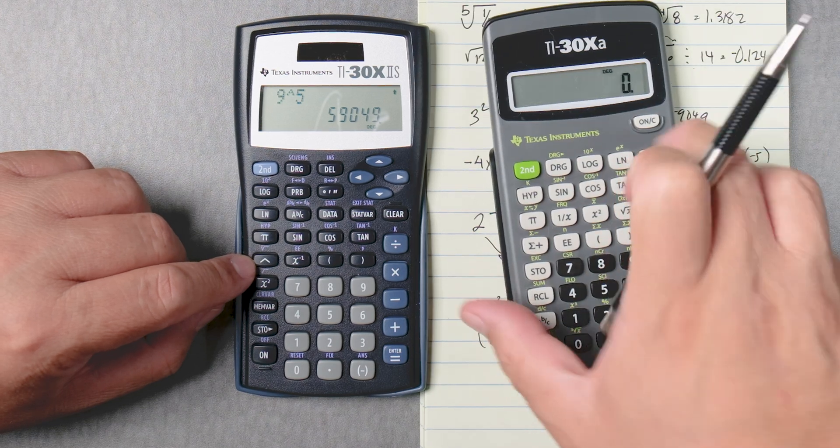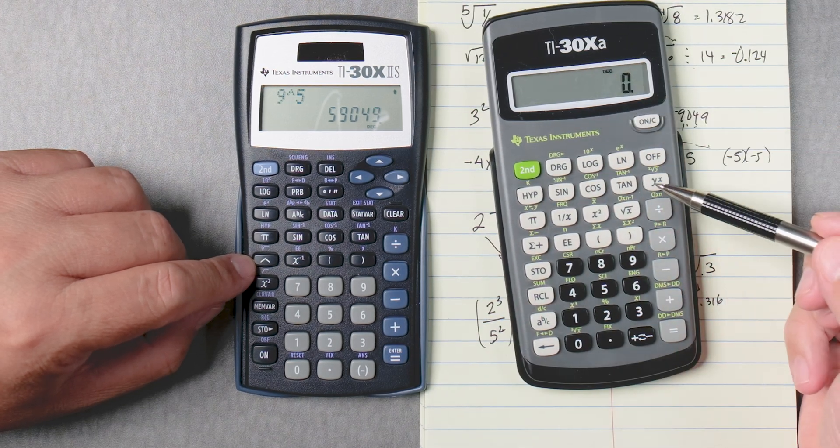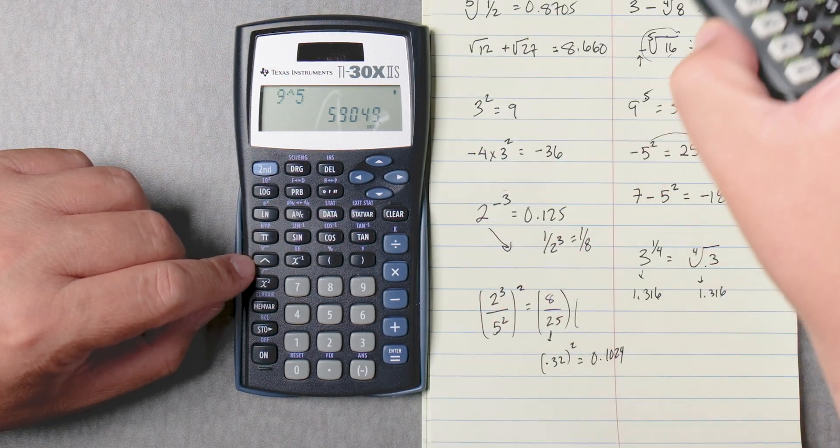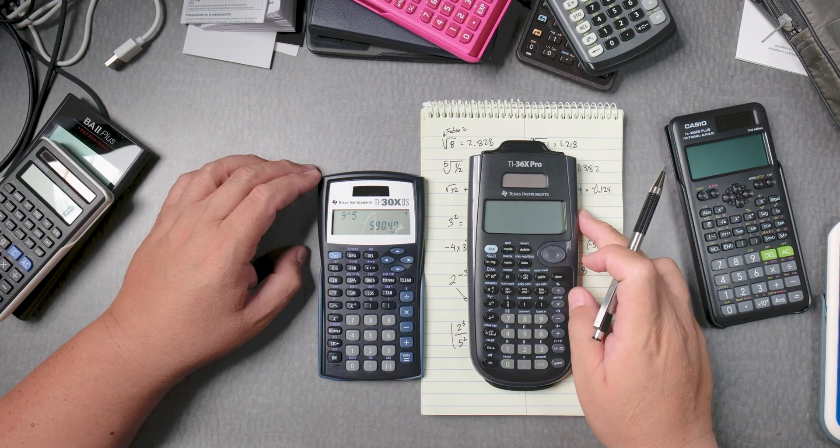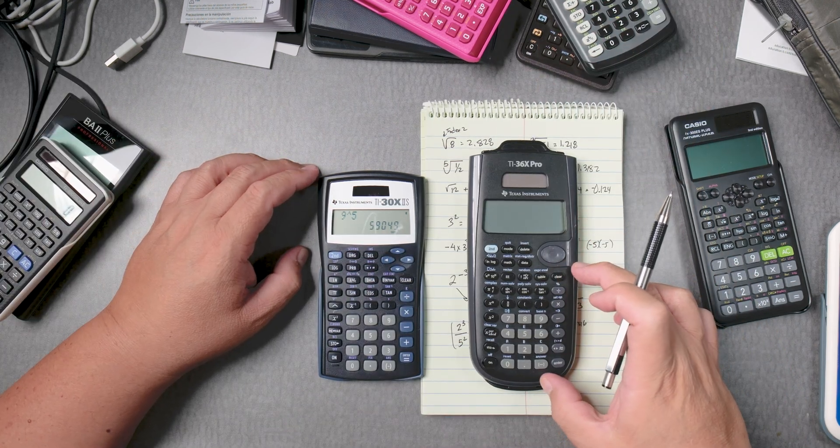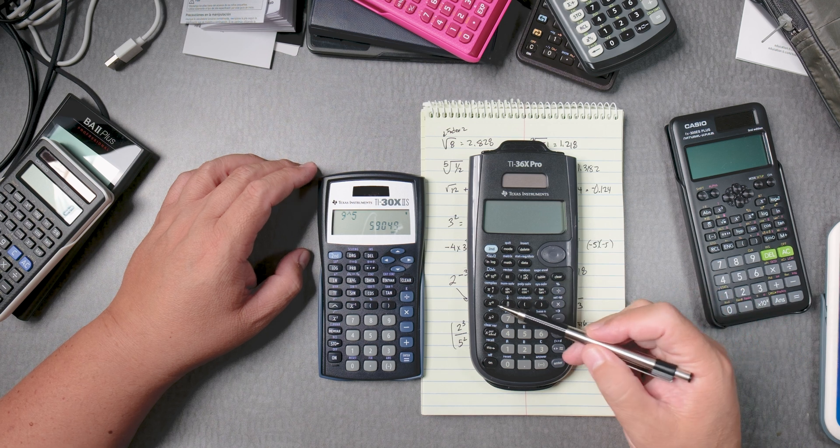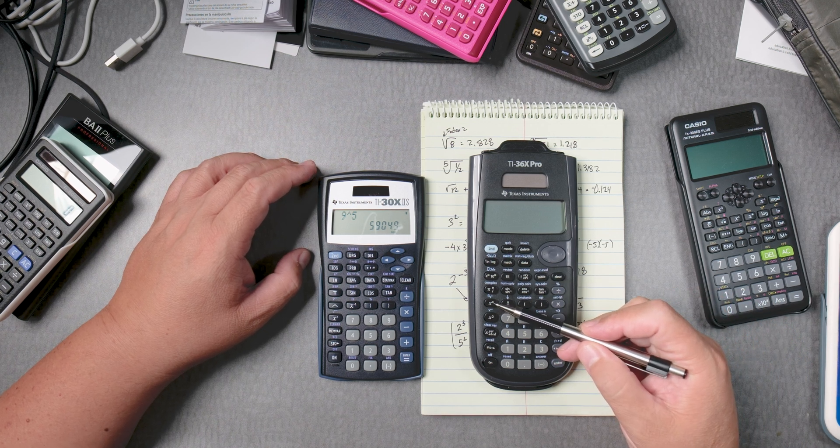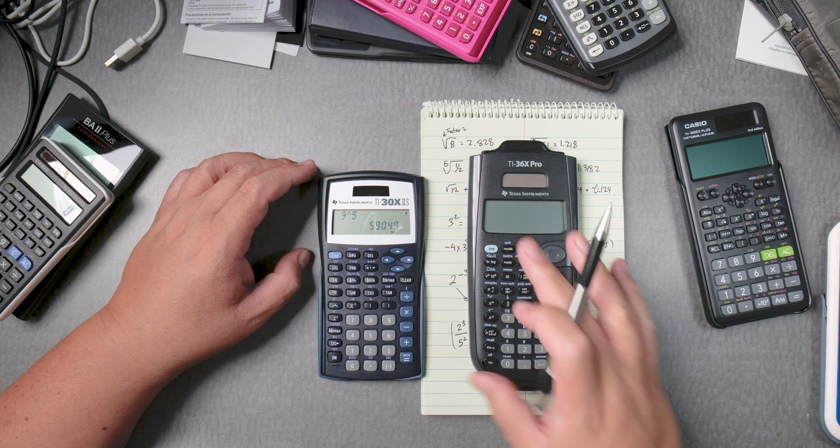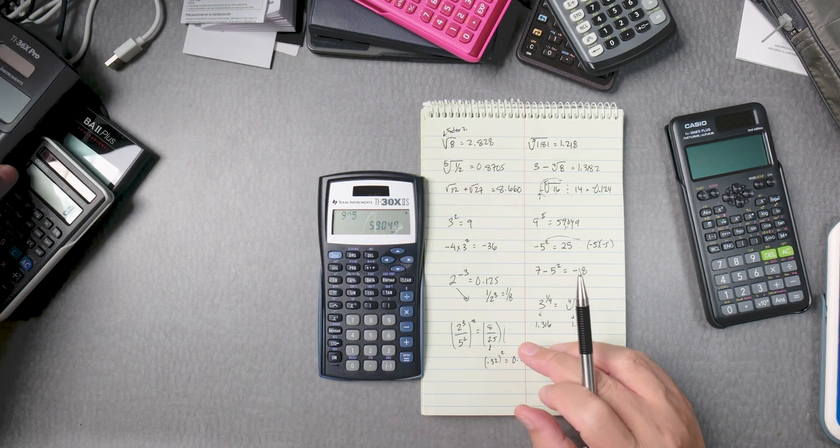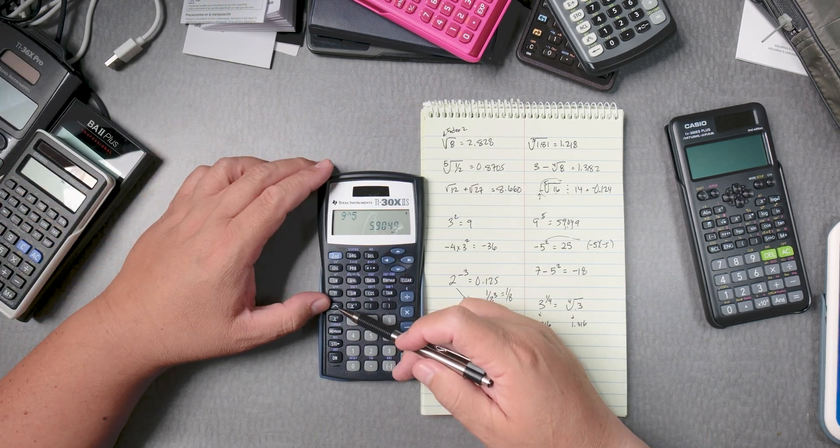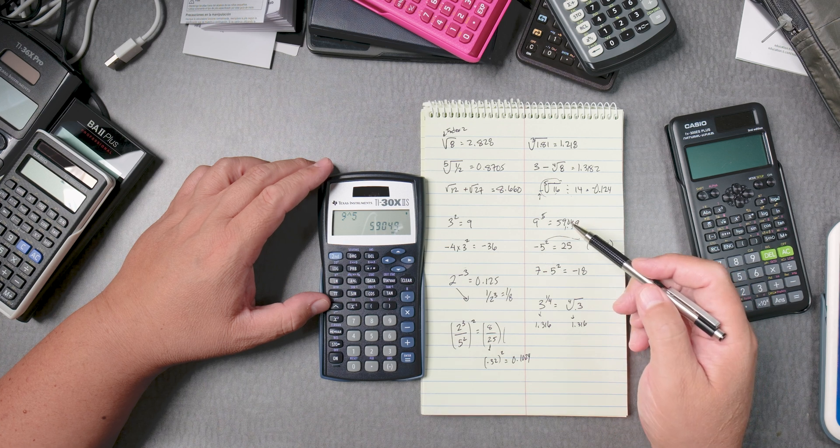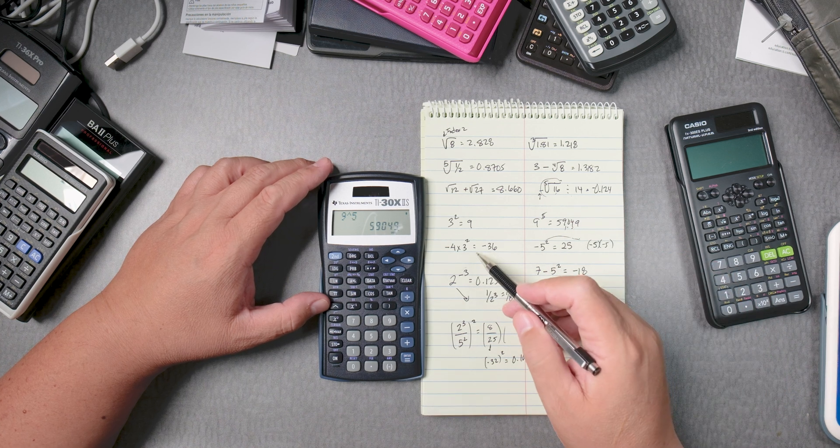On something like the TI-30XA, you have a Y to the X key, right? And if you look at the 36X Pro, which is the high-end one, this one has an X to a little square to tell you that. Alright, so different calculators have different ways of showing you the power. Okay, let's do this one.